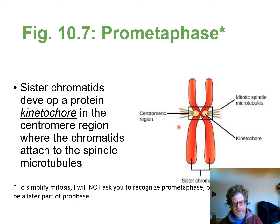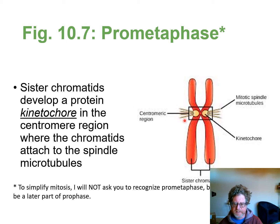In late prophase — what the book calls prometaphase — spindle fibers attach to the centromere, which is the narrow waist in the middle holding the chromatids together. There are special kinetochore proteins on that region, and protein rods attach there because they're going to separate the two identical sister chromatids.